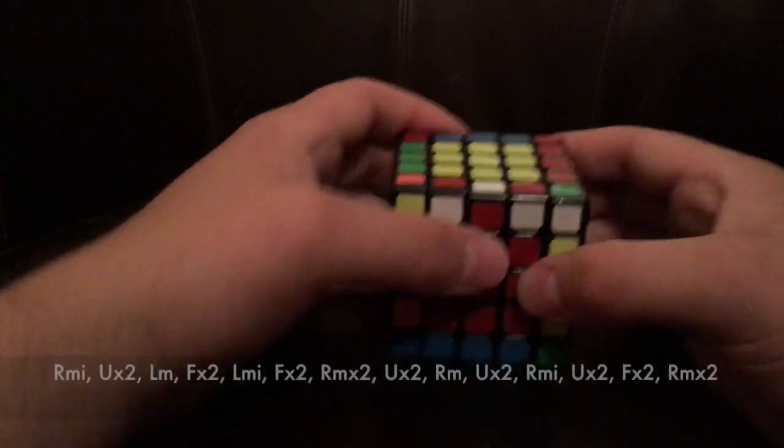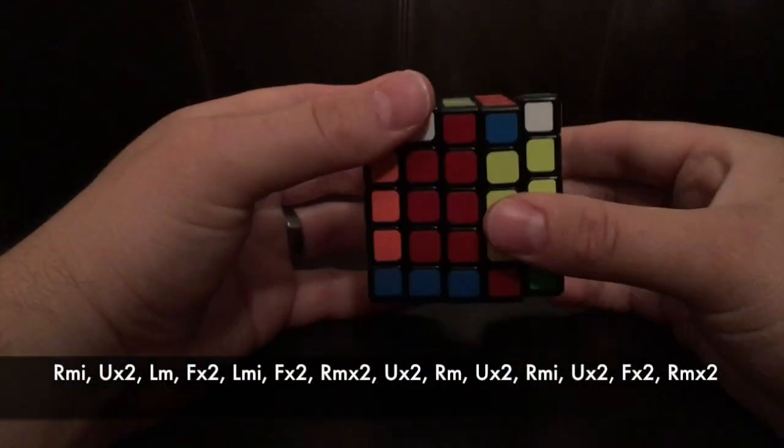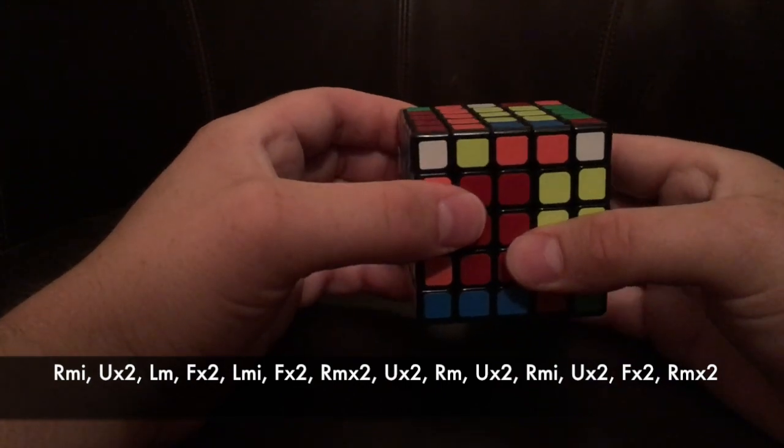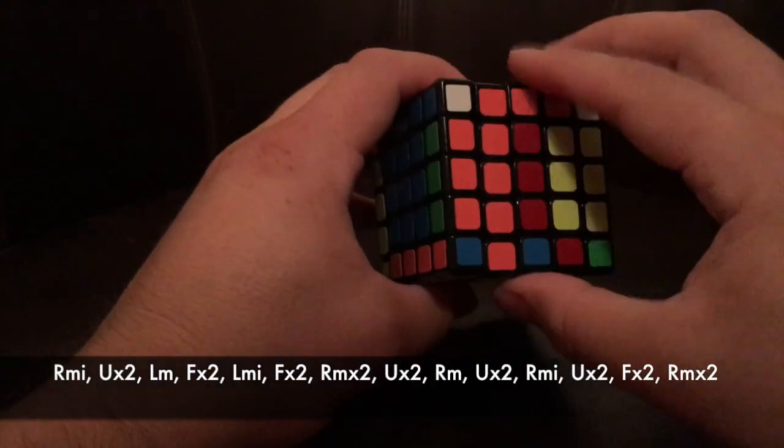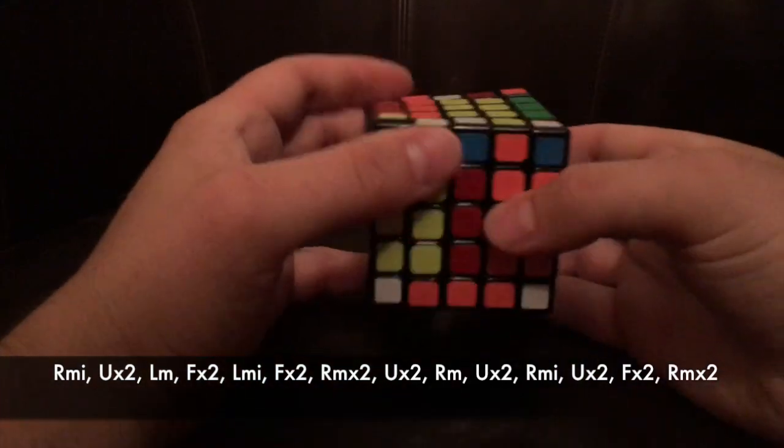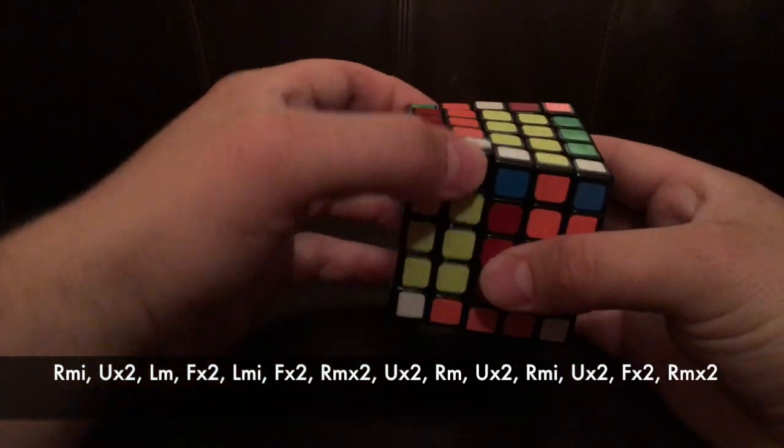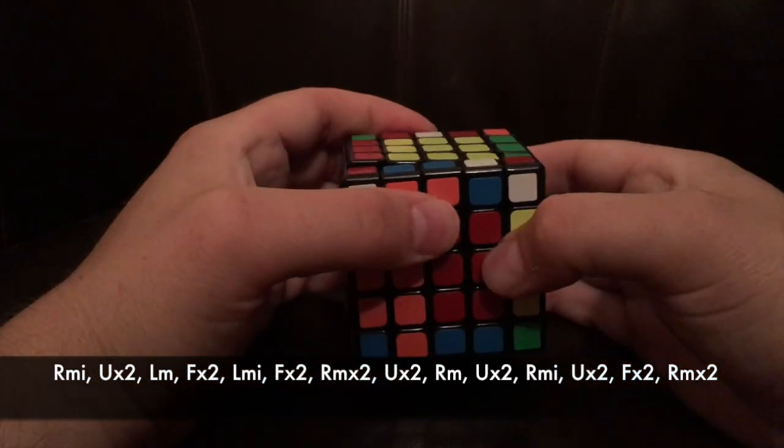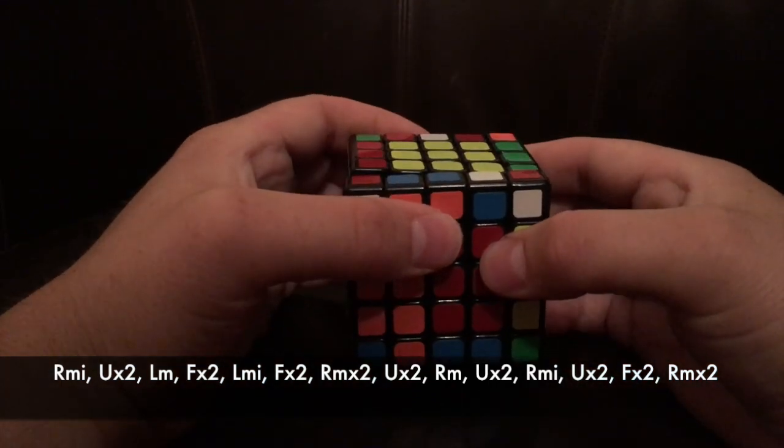So with that said, you want to go right middle inverse, upper twice, left middle, front twice, left middle inverse, front twice, right middle twice.